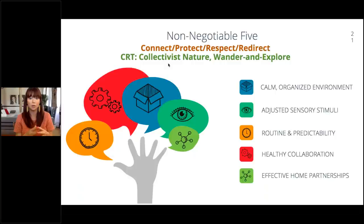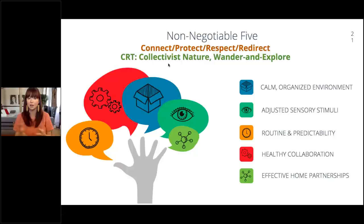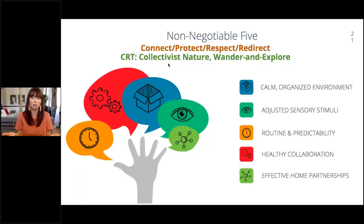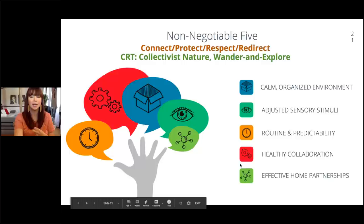The non-negotiable five are: a calm, organized environment; adjusted sensory stimuli — some students need more stimuli, some need less, being cognizant of wall materials, sound, abrupt light changes, and construction noise; routine and predictability, which creates structure, which creates trust, which creates safety, and safety is where students begin learning; healthy collaboration within the classroom and with teaching peers; and effective home partnerships. Teaching peers include school psychologists, counselors, nurses, and making sure there is healthy collaboration with all of those folks.